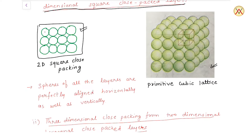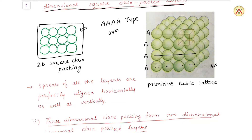If you keep repeating these layers, you get a structure where all the spheres in all layers are perfectly aligned horizontally and vertically. The first layer is called the A layer; the second layer is also exactly the same, so it is also an A layer. This continues, giving us an A, A, A type arrangement, which creates a primitive cubic lattice.